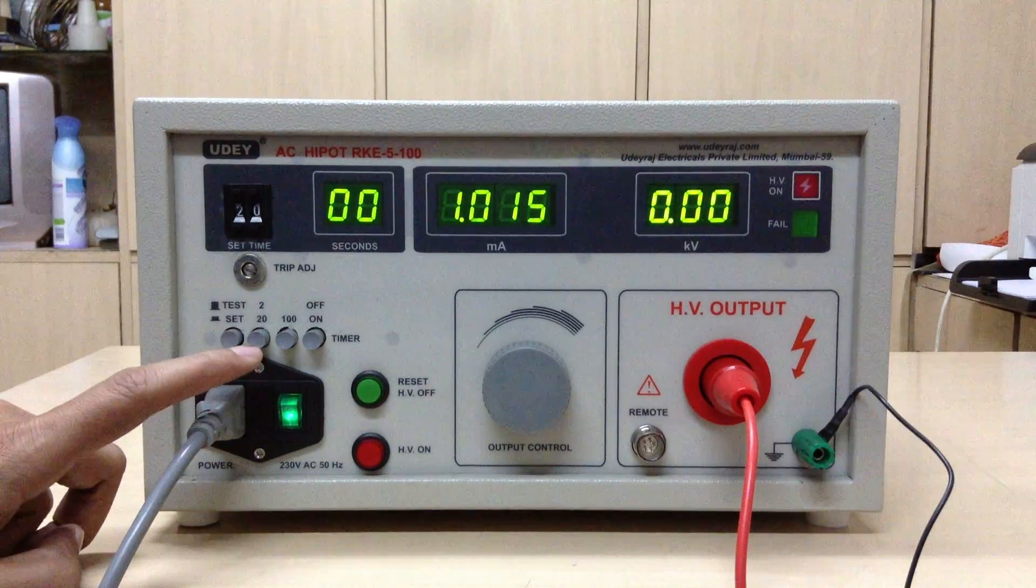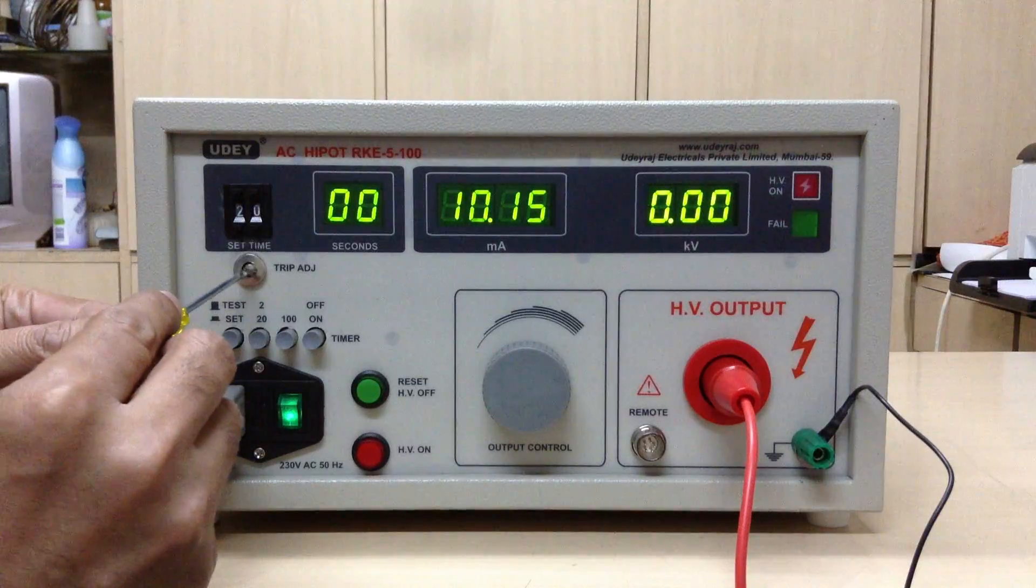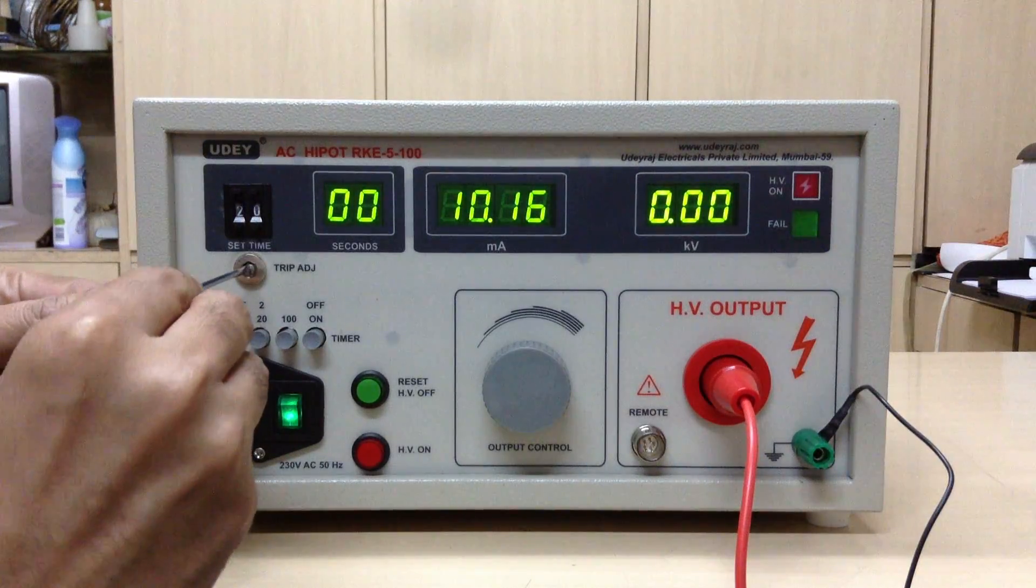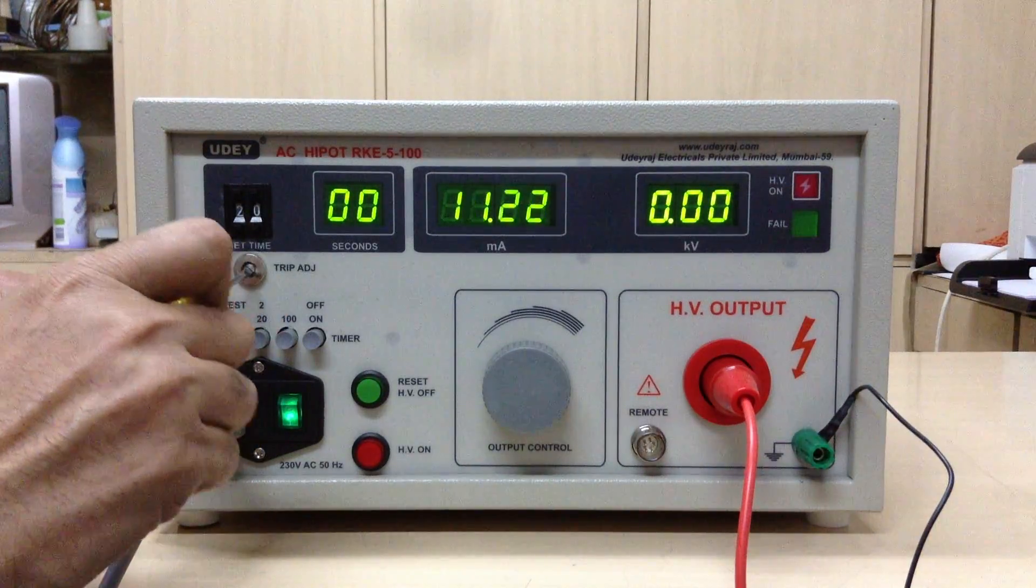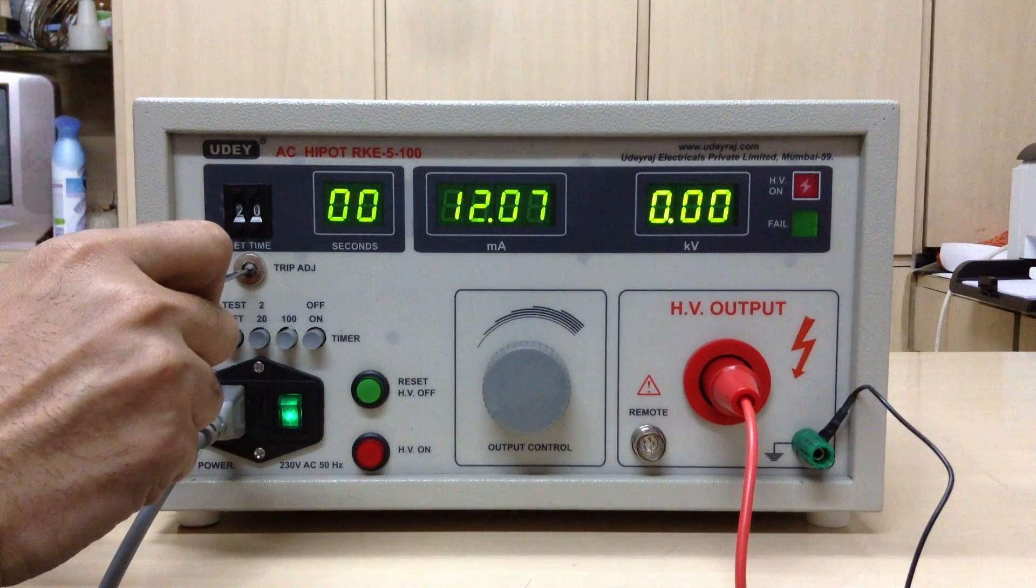For example, in this case we select 20 mAh which can be adjusted by this knob from 0 to 20 mAh wherever you want. For example, we select 12 mAh in this case.